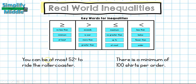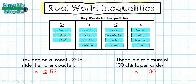Now for real-world examples: 'You can be at most 52 inches to ride the roller coaster.' I write n with a space and 52, look for 'at most' on the chart — that's less than or equal to — so n ≤ 52. For 'there is a minimum of 100 shirts per order,' I write n and 100, look up 'minimum' — that's greater than or equal to — so n ≥ 100.